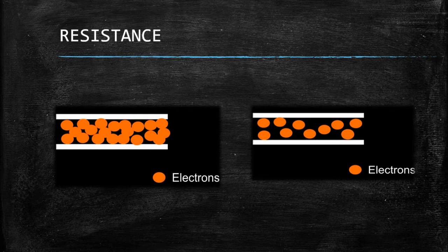The material which offers less resistance is called a good conductor, and the conductor which offers very high resistance is called a bad conductor.